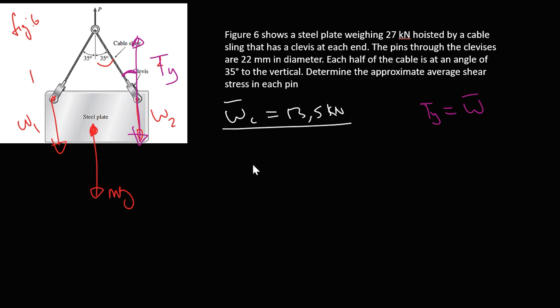This is adjacent, so we're going to use cosine. Cosine of 35° equals the adjacent, which is Ty, over the hypotenuse, which is tension T. But we know that Ty equals the weight component, so we can substitute. Cross multiply to find tension: T equals...